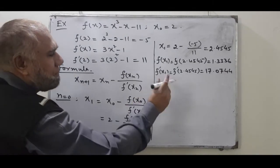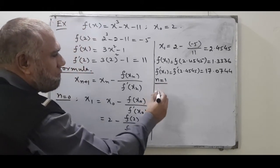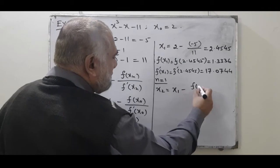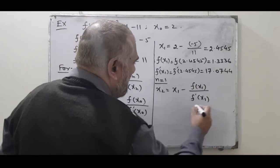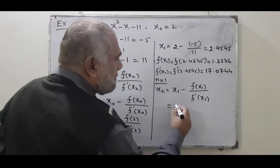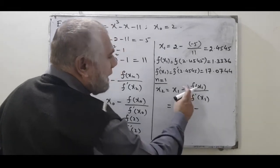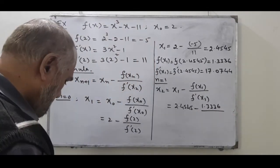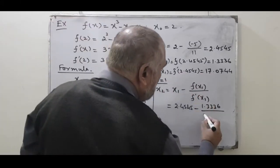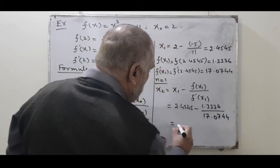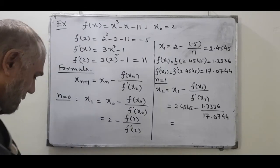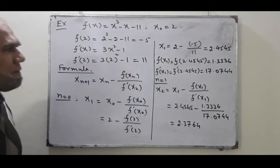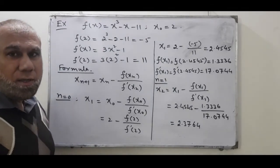Now for the next iteration with n = 1, we get x₂ = x₁ - f(x₁)/f′(x₁). Substituting: x₂ = 2.4545 - 1.3336/17.0744. Solving this with a calculator gives x₂ = 2.3764. This is the next better approximation after the second iteration.